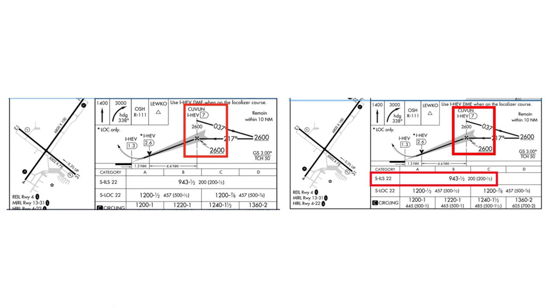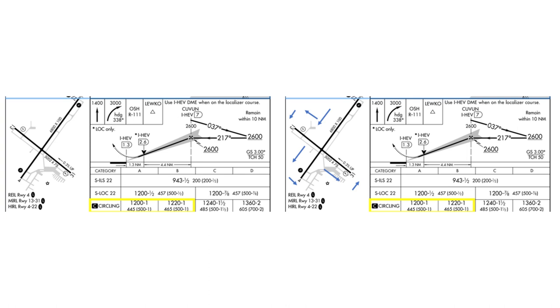I also use annotations to highlight key information in the profile view. For example, a red box surrounds the final approach fix to call out the fix name and crossing altitude. Another red box highlights the straight-in minimums — a decision altitude of 943 feet and 1.5 mile visibility. In my color scheme, a blue box denotes the localizer-only MDA for categories A and B. Another blue box reminds me to brief the visual descent point, which is associated with the straight-in MDA for the localizer-only approach. A yellow box highlights the circling MDA, again only for categories A and B. And blue arrows are reminders of left traffic for other runways if you circle.